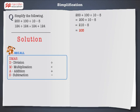Now let us solve the next problem. We follow the same steps as in the last simplification problem: 124 divided by 124 multiplied by 124 plus 124.